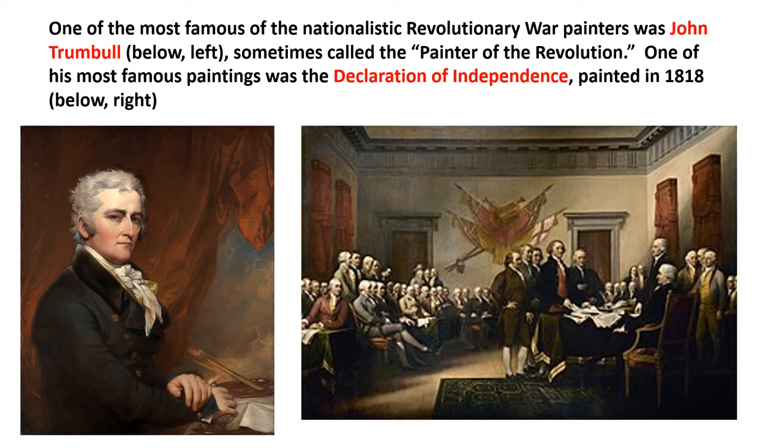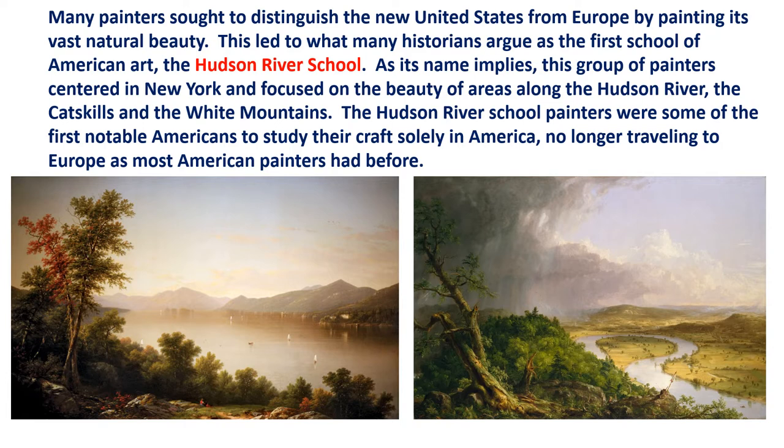Many painters sought to distinguish the new United States from Europe by painting its vast natural beauty. This led to what many historians argue is the first school of American art: the Hudson River School. This group of painters centered in New York focused on the beauty of areas along the Hudson River, the Catskills, and the White Mountains. Hudson River School painters were some of the first notable Americans to study their crafts solely in America, no longer traveling to Europe as most painters had before.